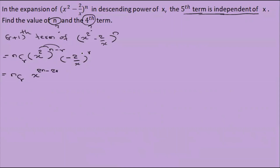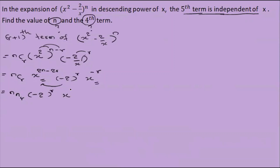Minus 2r, and x to the power 2n minus 2 by x to the power r. Combining the powers of x gives x to the power 2n minus 3r.